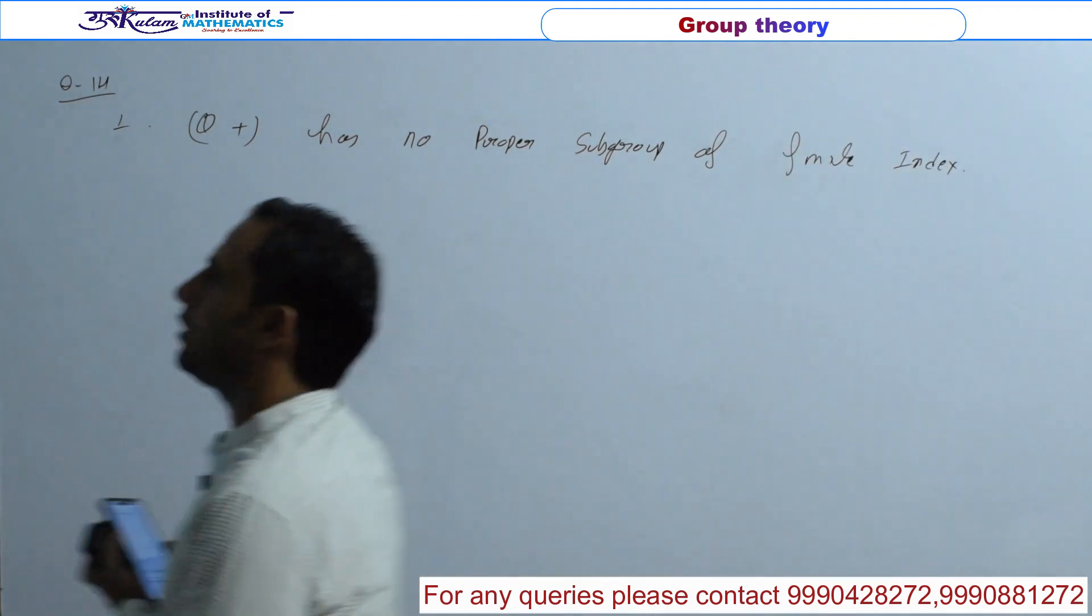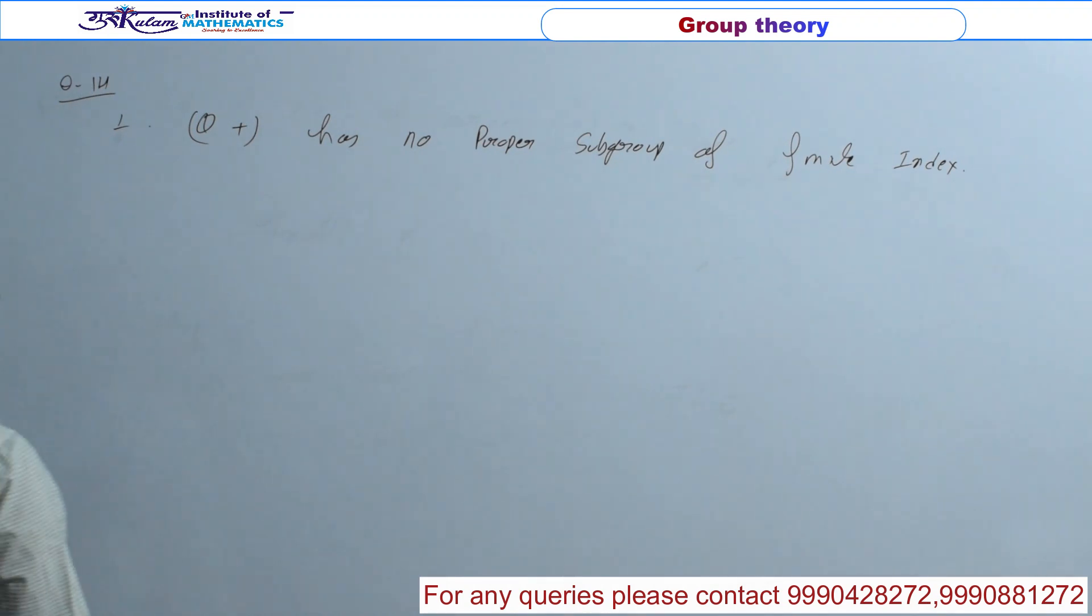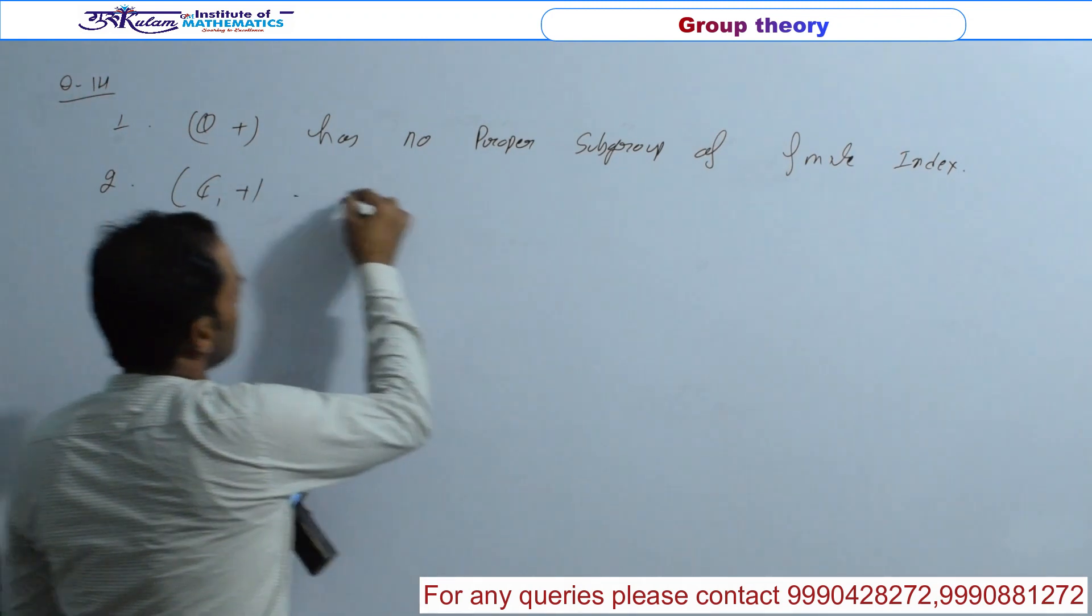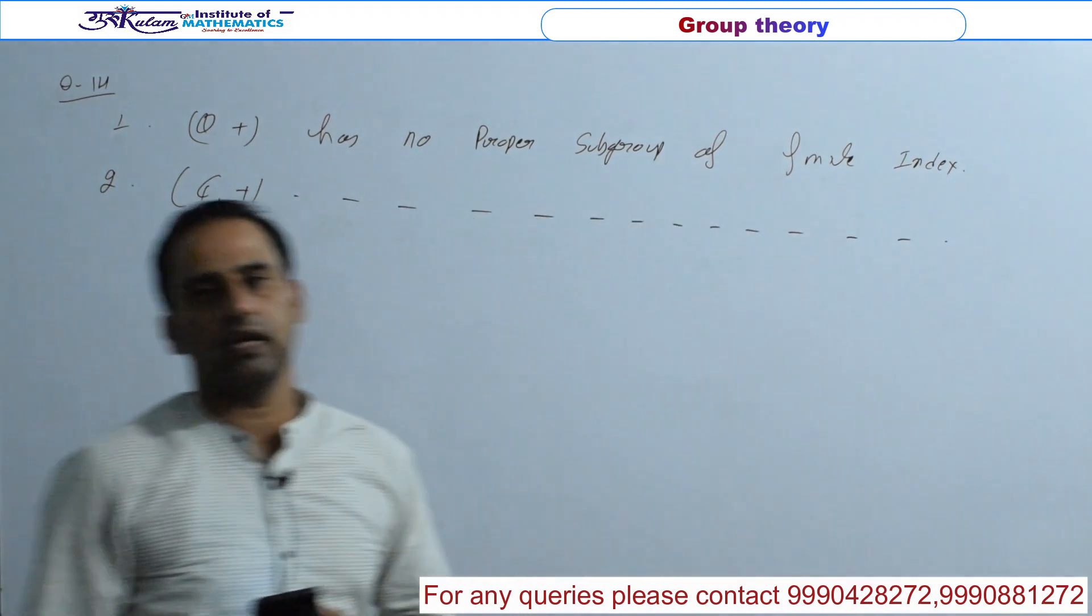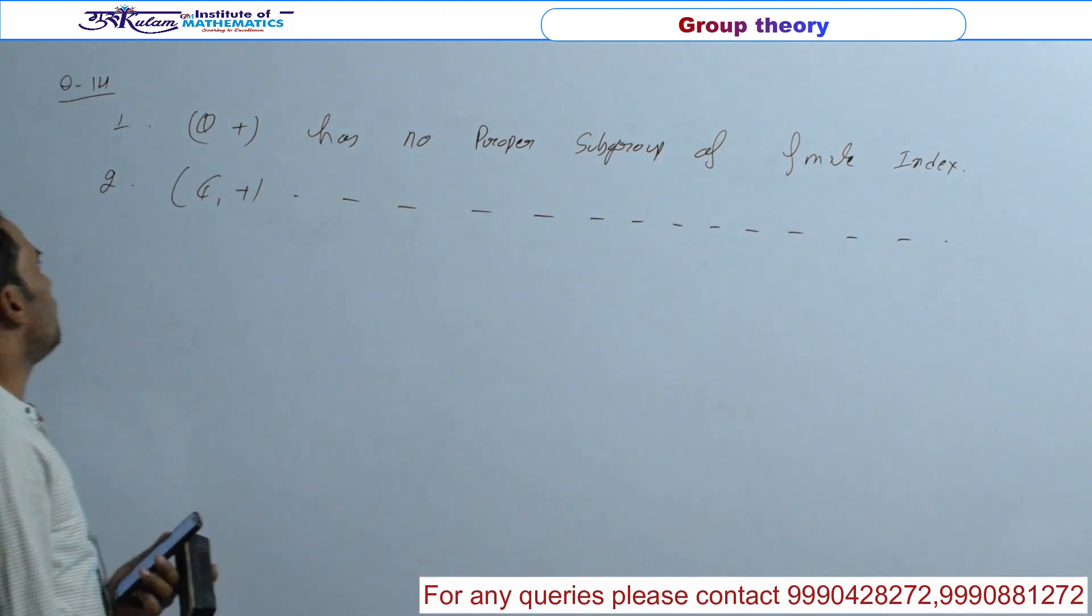तो index of a group क्या होता है? Number of distinct co-sets in a group. Second one, C plus the group of complex numbers under addition has no proper subgroup of finite index. और आपको verify करना है कि which of the following statement is true.